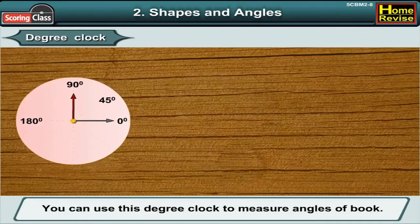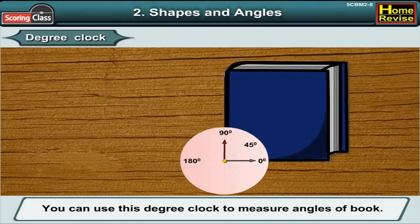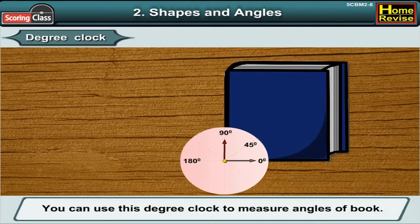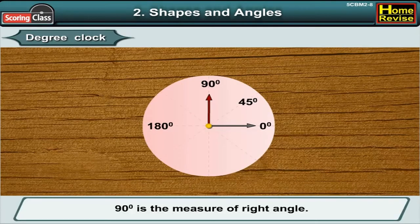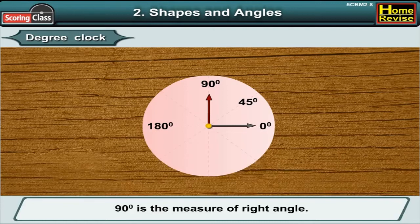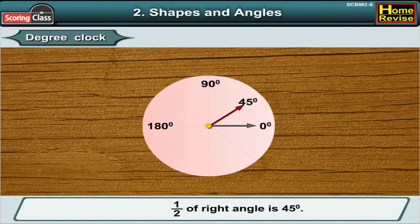Now, 90 degrees is the measure of a right angle. Half of a right angle is 45 degrees.